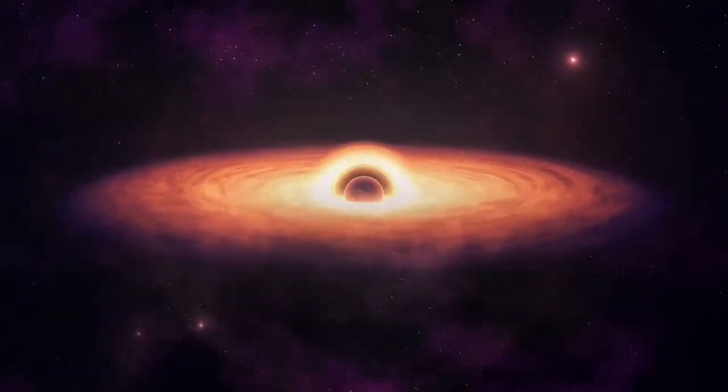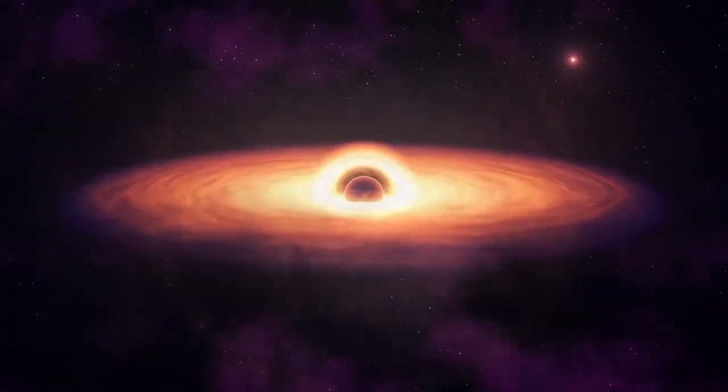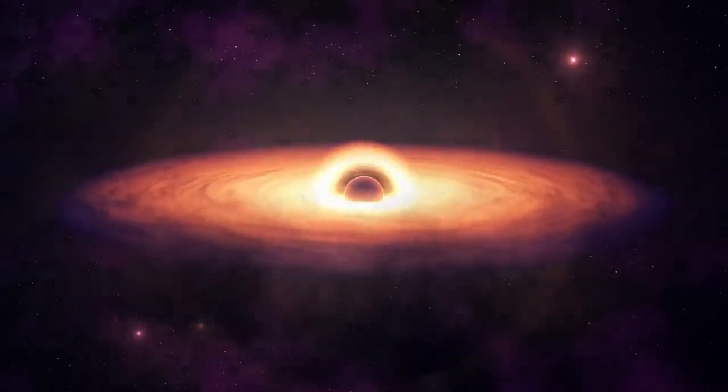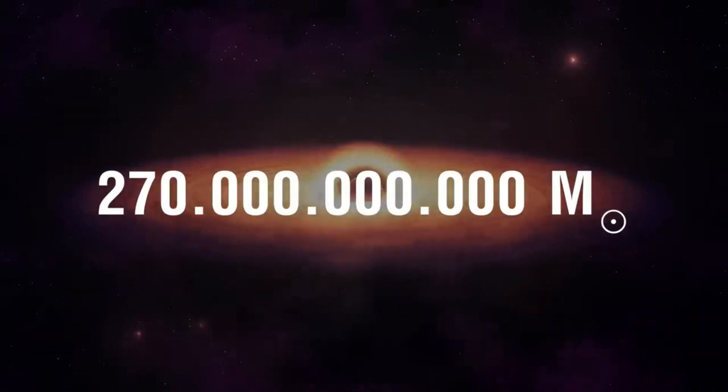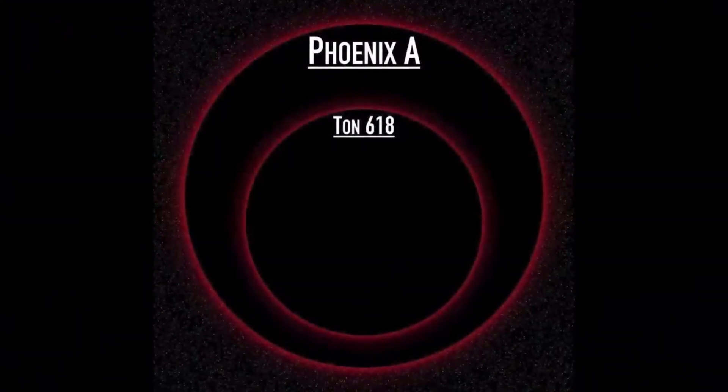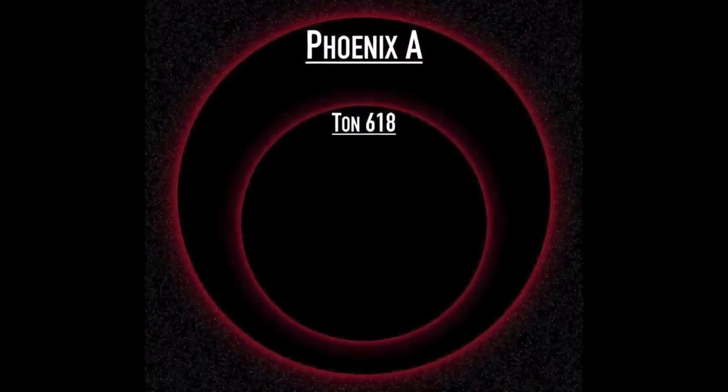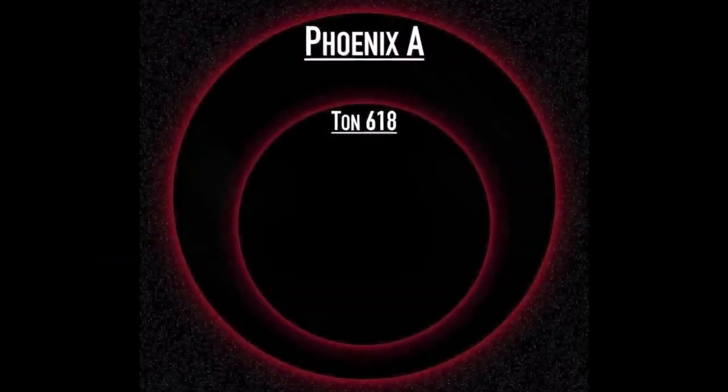However, the report also indicates that in extreme cases, a black hole growing via the accretion disk method could reach up to 270 billion solar masses. This means that both Ton 618 and Phoenix A could continue to grow in the future, surpassing this limit.